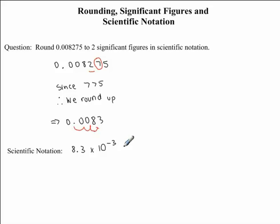Therefore, our number rounded to two significant figures and in scientific notation will be 8.3 times 10 to the exponent negative 3.